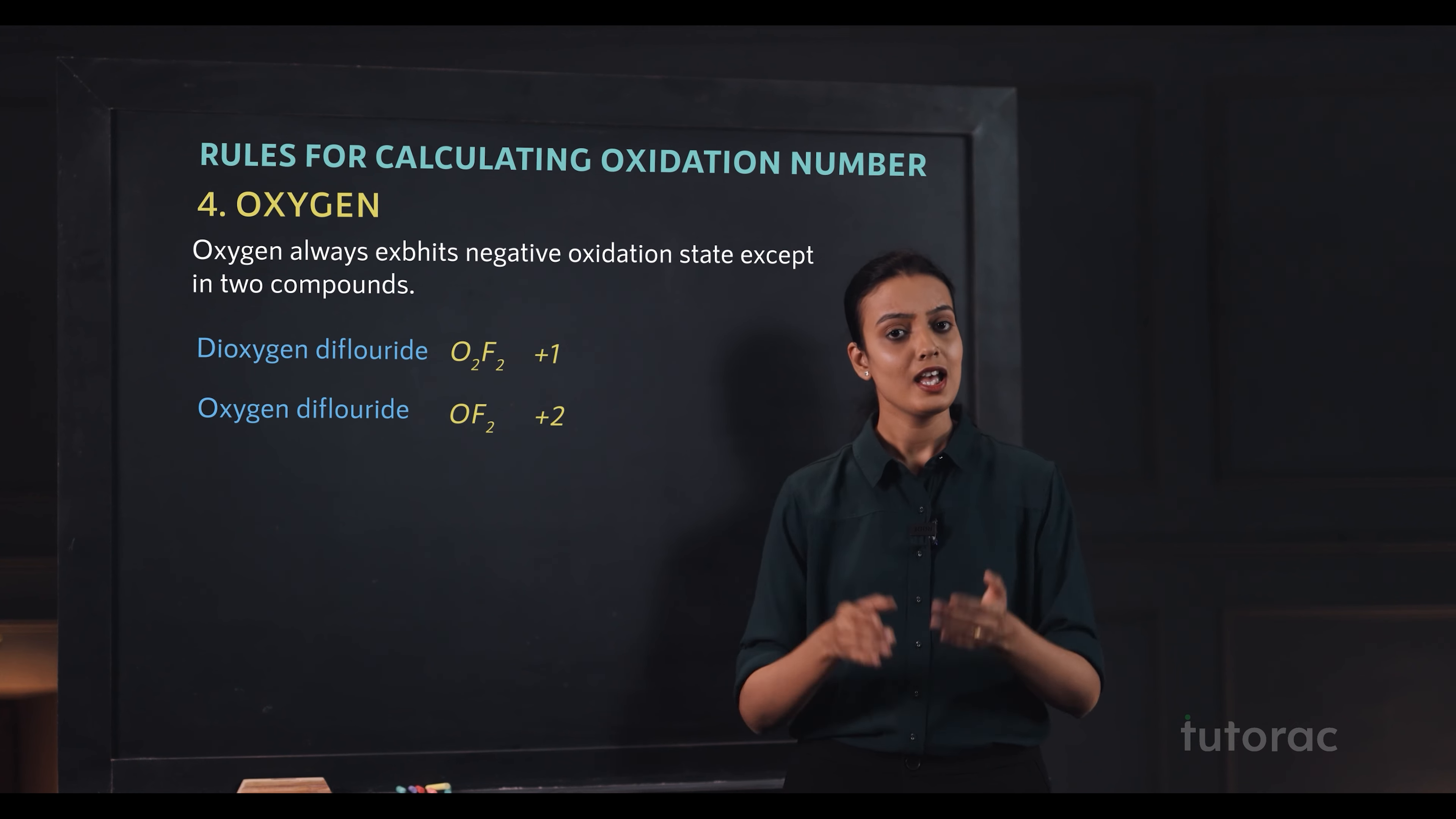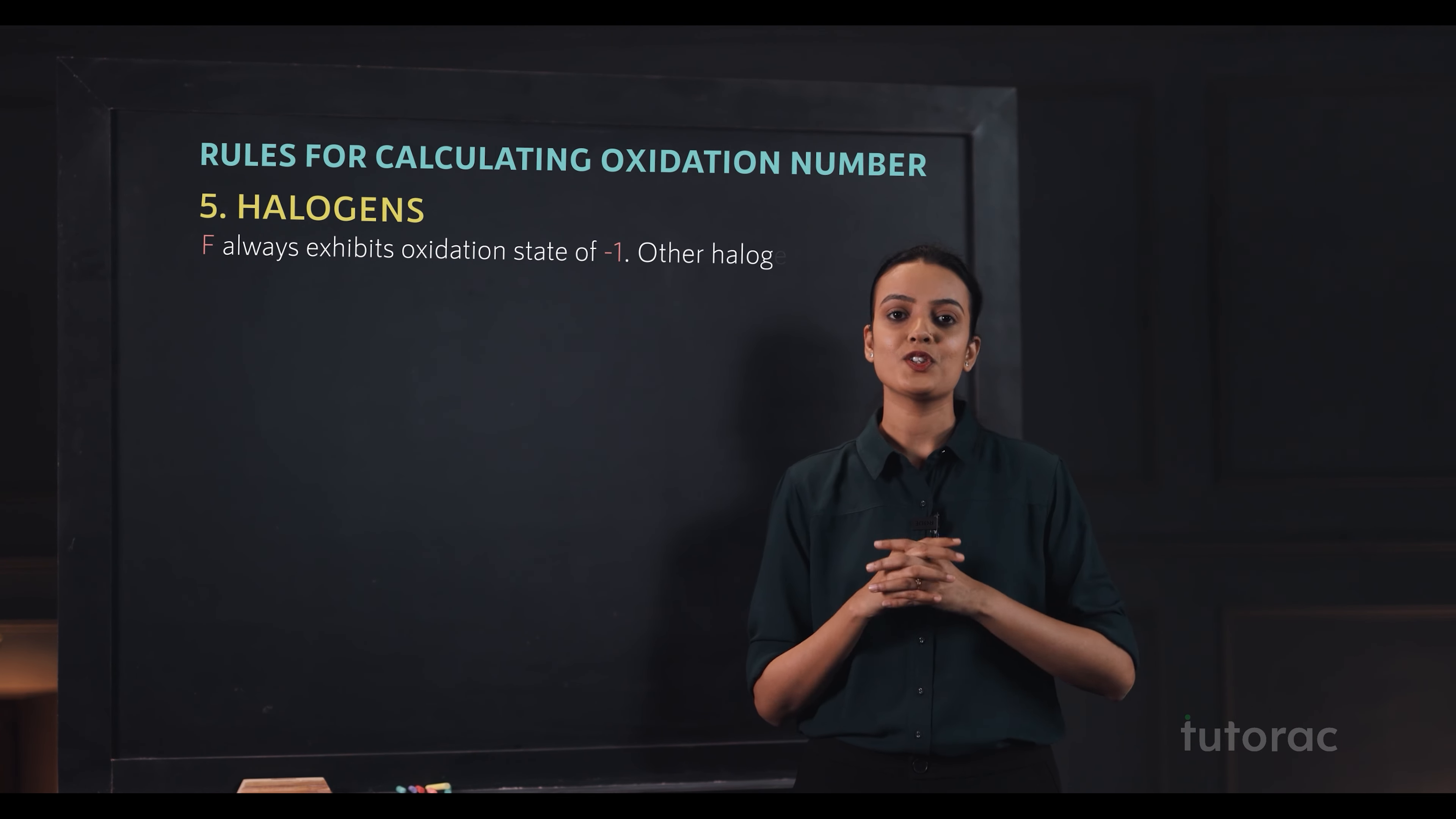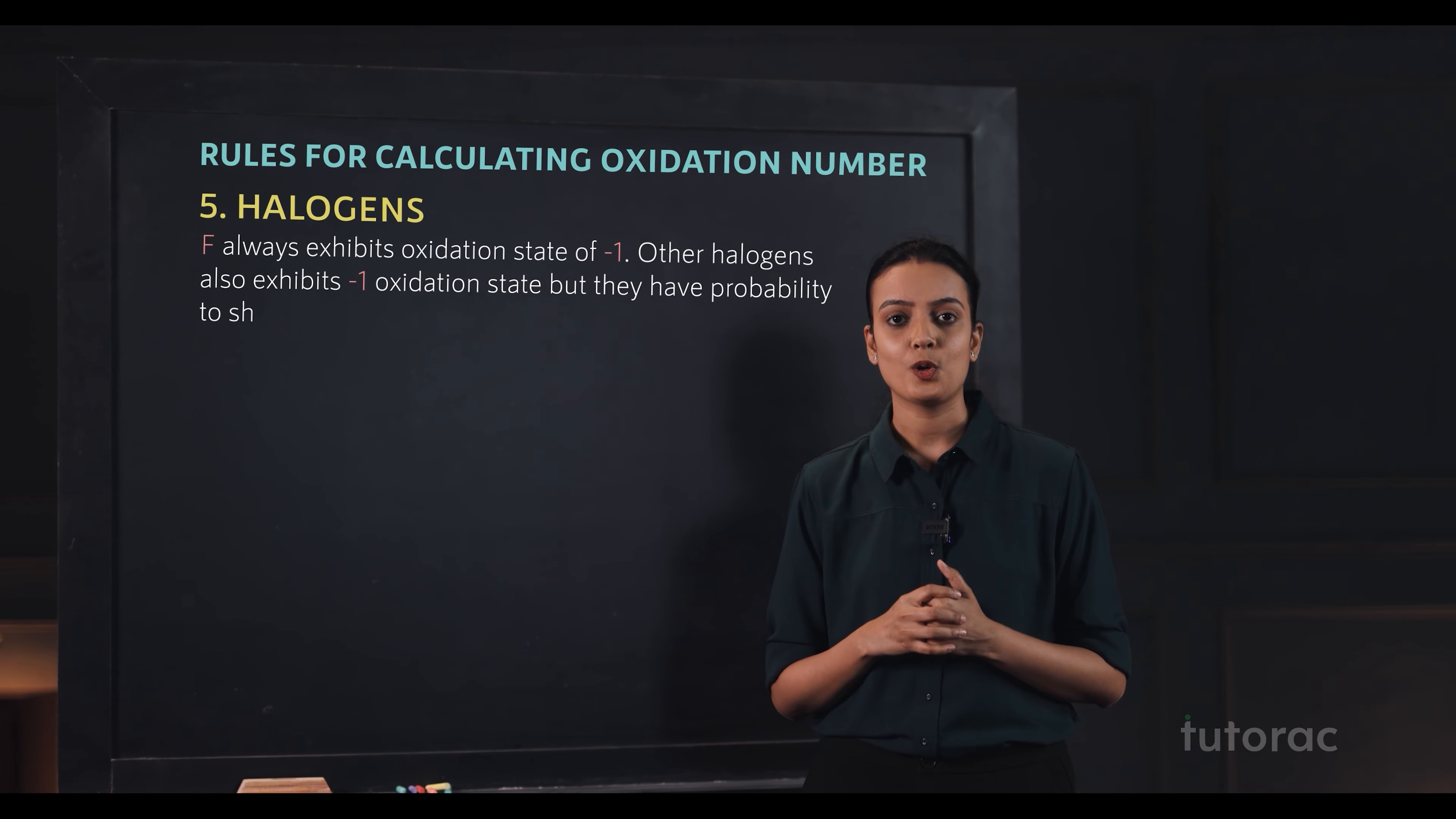Coming to halogens, fluorine always exhibits oxidation state of minus 1. Other halogens also exhibit minus 1 oxidation state but they have a probability to show other oxidation states also.